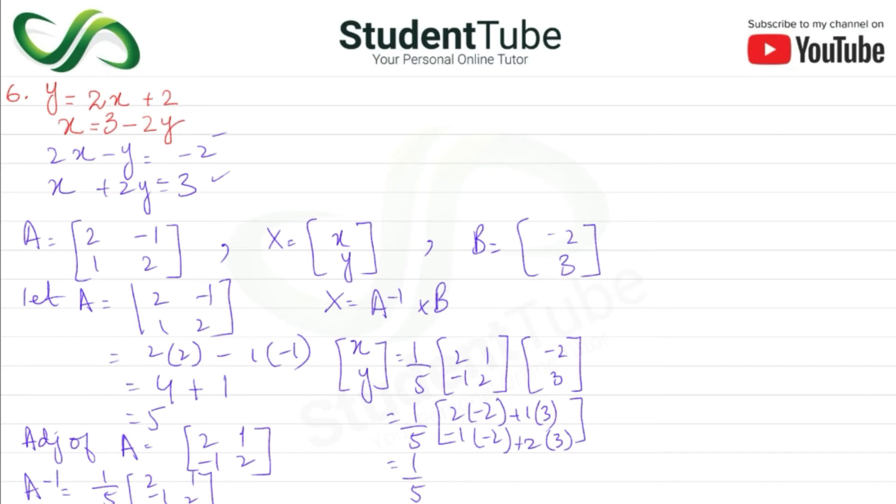This gives 1 upon 5 times: -4 plus 3 equals -1, and 2 plus 6 equals 8. So 1 upon 5 times the matrix [-1; 8].